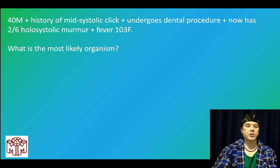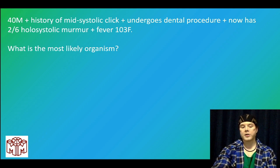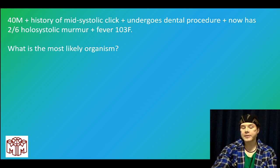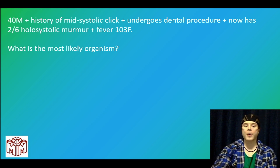A 40-year-old man with a history of mid-systolic click (mitral valve prolapse) undergoes a dental procedure and now has a 2/6 holosystolic murmur (mitral regurgitation) and fever of 103. Most likely organism? On USMLE, this is strep sanguineus or strep mutans — i.e., strep viridans. This is subacute endocarditis; the organism produces lim dextrin carbohydrate, allowing it to adhere to valves.